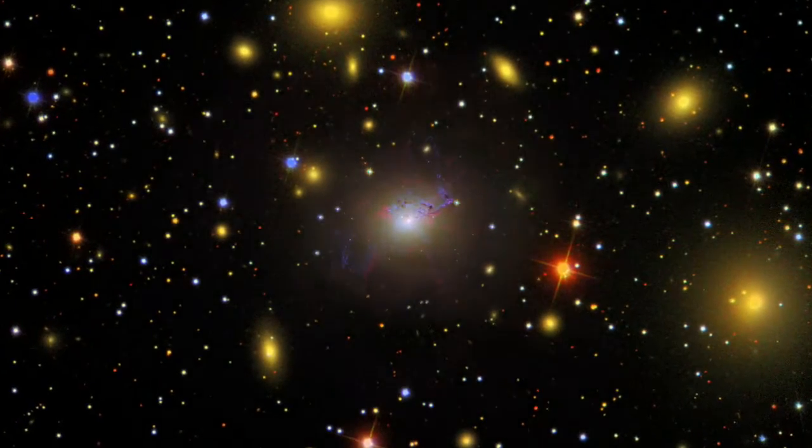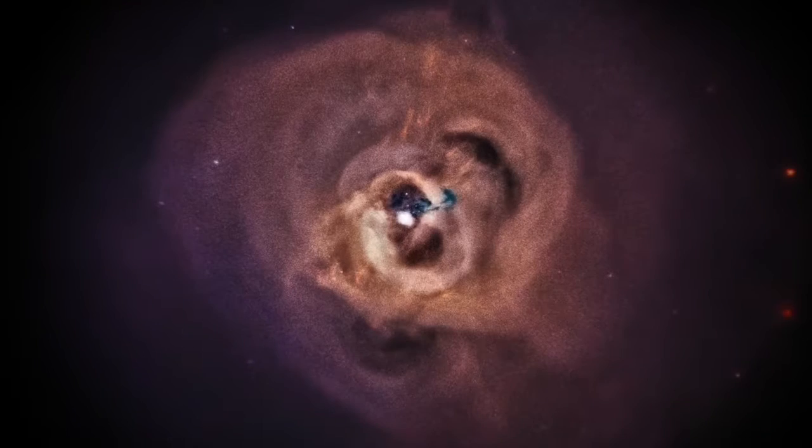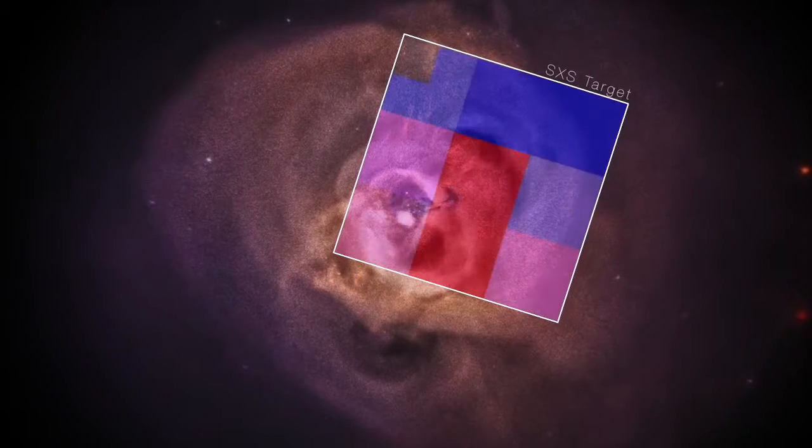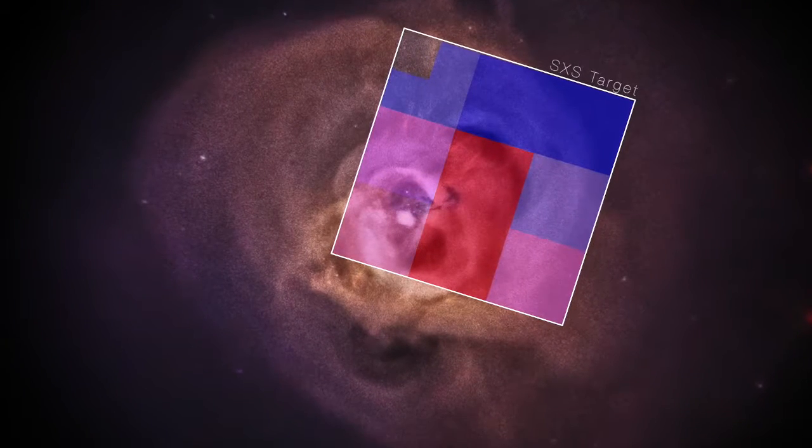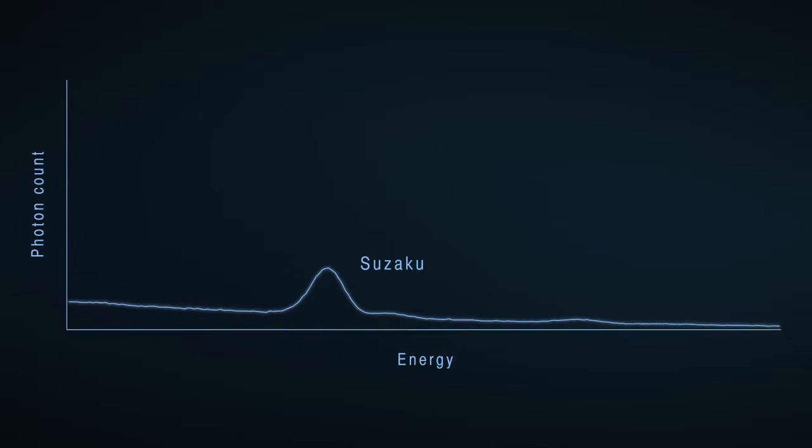This multi-million degree gas makes the Perseus galaxy cluster the brightest in the sky when seen in X-rays. But until now, details about the motion of this gas were out of reach. Here's the best previous spectrum of the cluster from Japan's Suzaku mission.